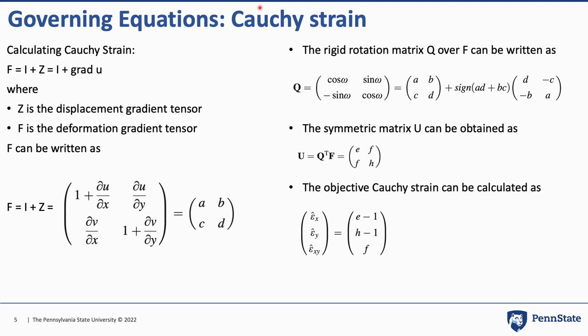To calculate the Cauchy strain, looking at large deformation theory: Cauchy strain is given by F = I + Z = I + grad U, where Z is the displacement gradient tensor and F is the deformation gradient tensor. F can also be written in matrix form. Q, the rigid rotation matrix of F, is written as shown. U, a symmetric matrix, can be obtained from these equations. Finally, the Cauchy strain is calculated using the final displayed equation.